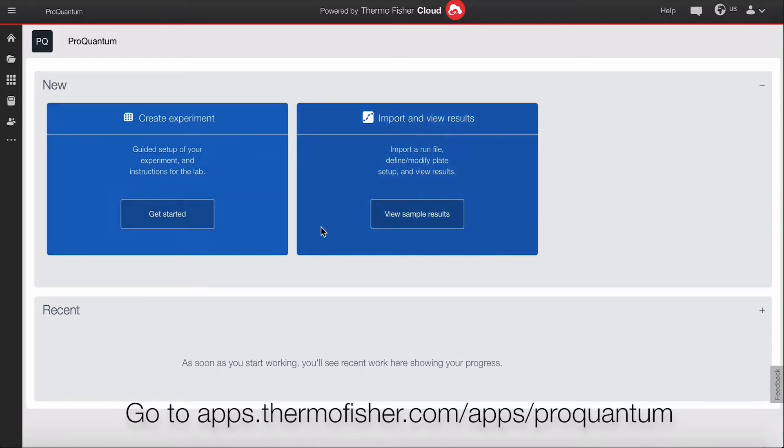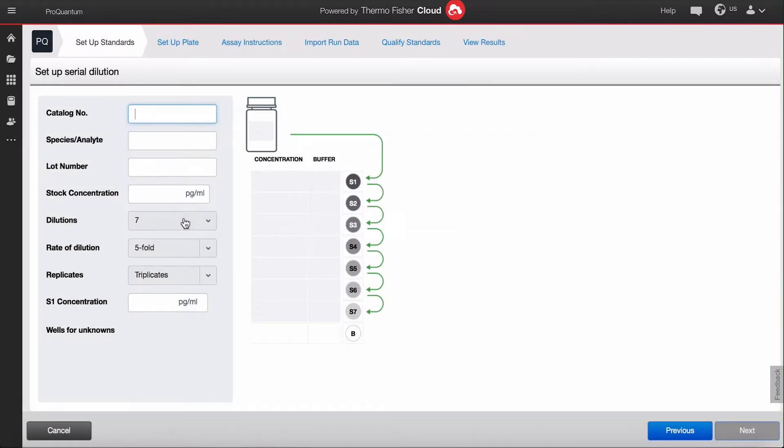When you open the app, click on get started. The software supports you with a standard curve setup wizard. When you type in the kit catalog number, there will be a default setting.